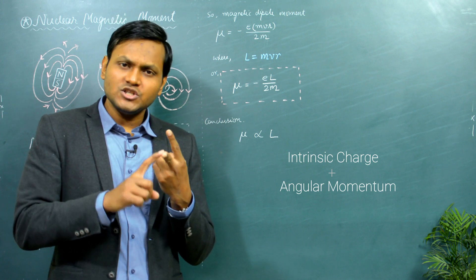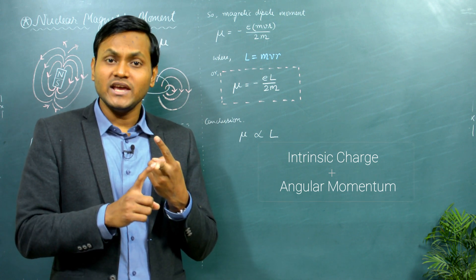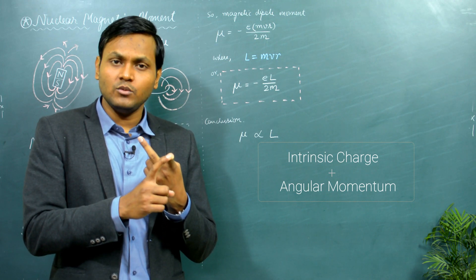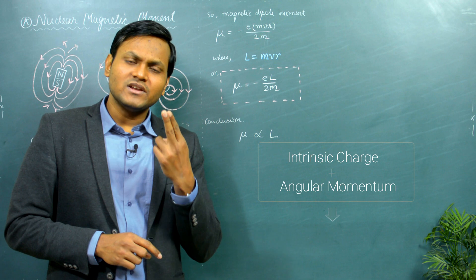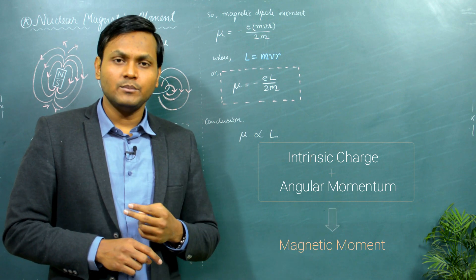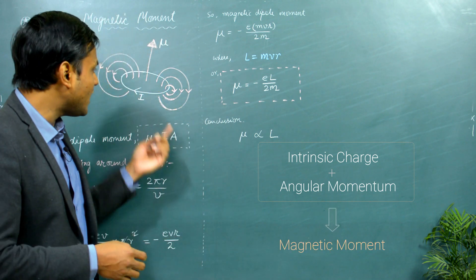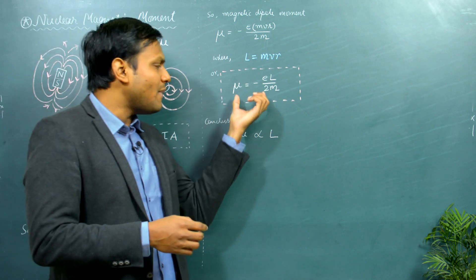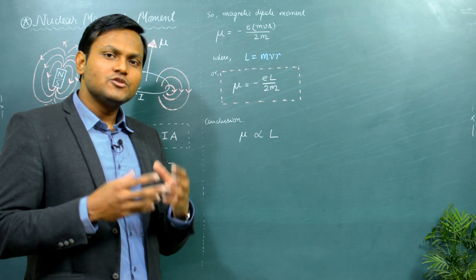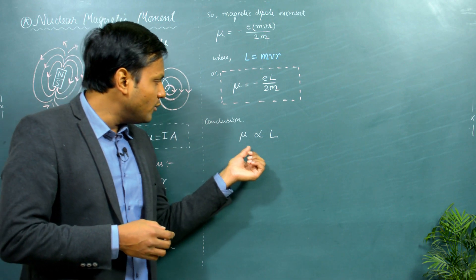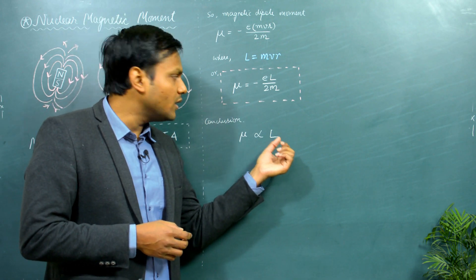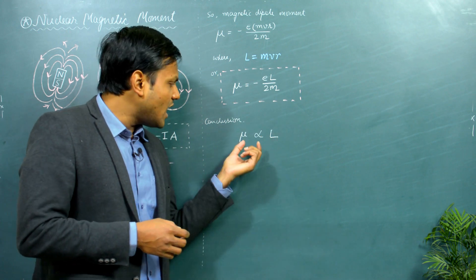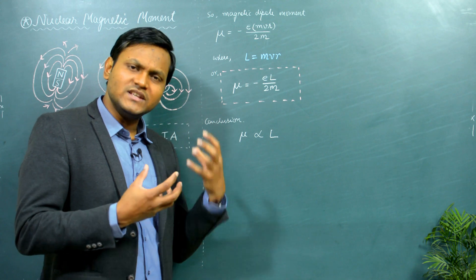Whenever a charged particle having some kind of charge is involved in some kind of rotational motion where there is an angular momentum associated with it, it will result in a magnetic moment for that particular particle. In this case we have a charged electron revolving around the nucleus resulting in a magnetic moment of the electron around the nucleus. Therefore the magnetic moment is directly proportional to angular momentum — because the rest are all constants, the larger the angular momentum, the larger is going to be the magnetic moment.